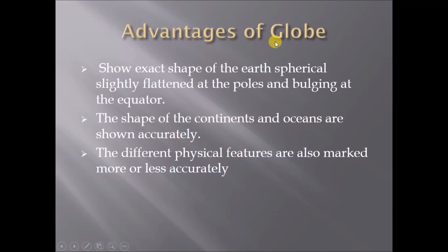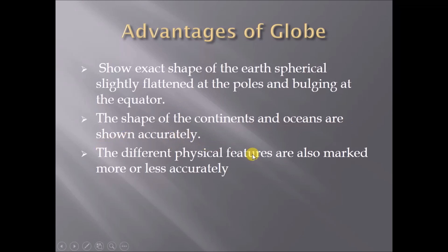What are the advantages of a globe? A globe shows the exact shape of the Earth — slightly flattened at the poles and bulging at the equator. The shapes of the continents and oceans are shown accurately. The different physical features are also marked more or less accurately.